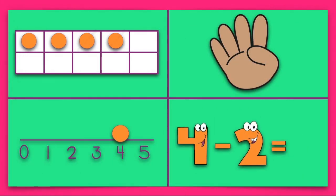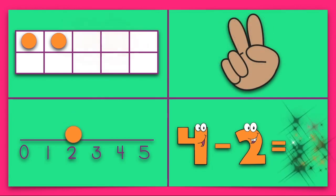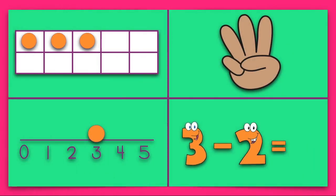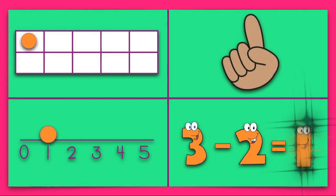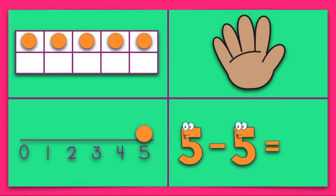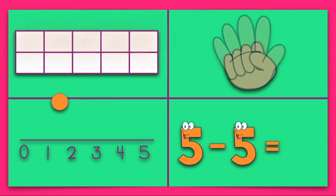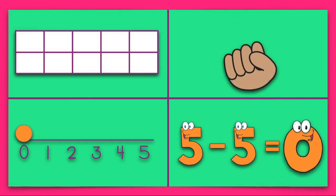4 minus 2 equals 2. 3 minus 2 equals 1. 5 minus 5 equals 0.